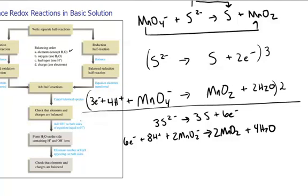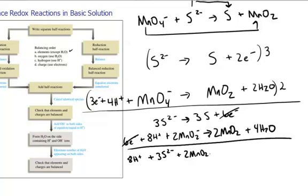Now I have a bit of a problem here because even though my elements are balanced, I need to add these two together. It looks like my elements are all balanced. My electrons are balanced. Let me go ahead and add them together. So it's eight hydrogen plus three sulfide plus two permanganate gives two manganese oxide plus three sulfur plus four water. What's my problem?